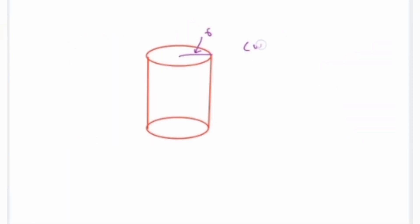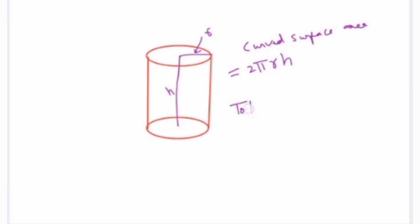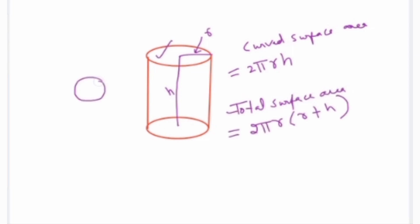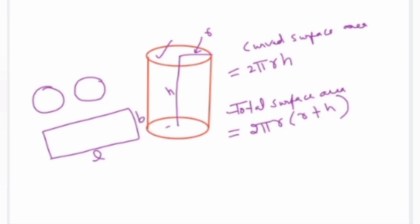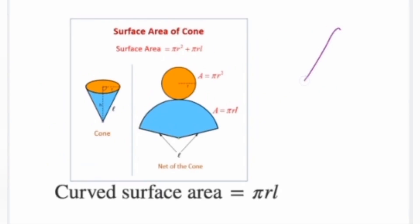The next solid is the cylinder. The curved surface area of a cylinder is 2πrh, where r is the radius and h is the height. The total surface area of the cylinder is 2πr(r + h).